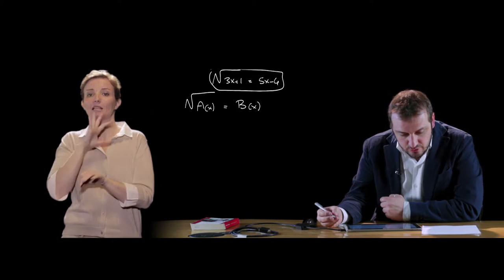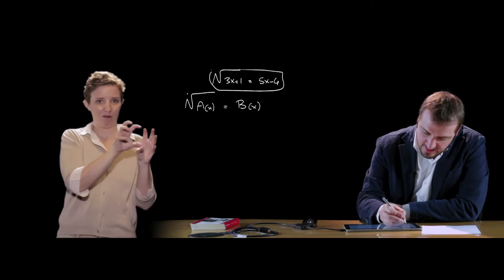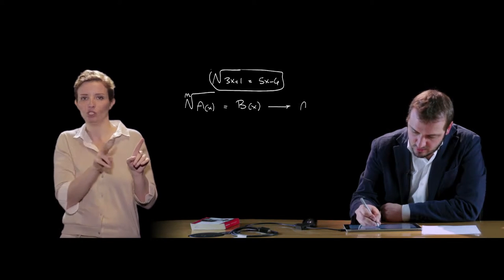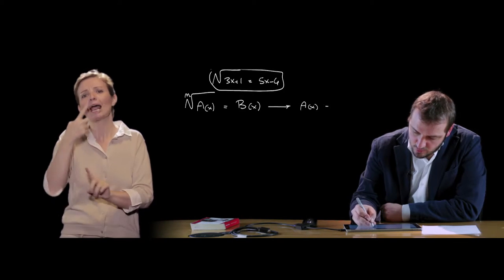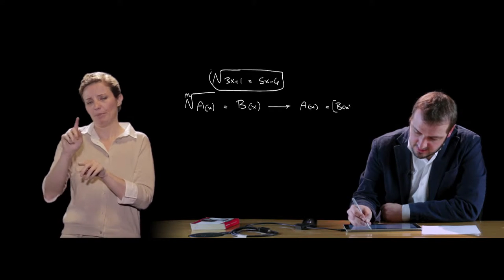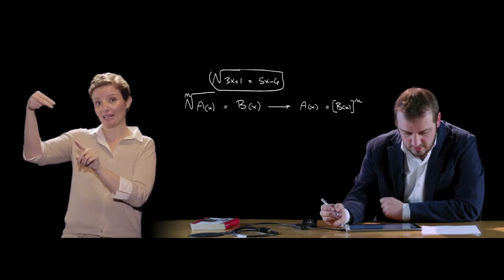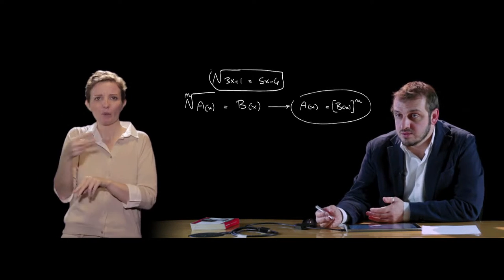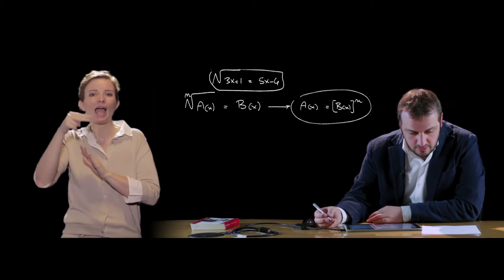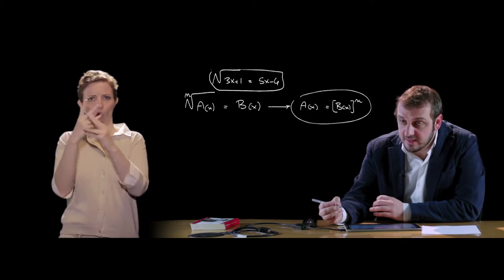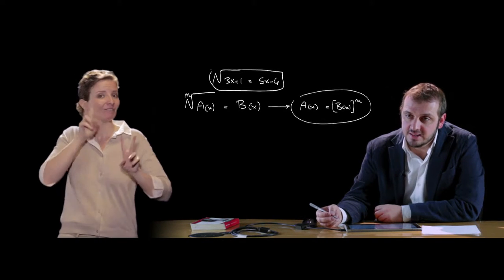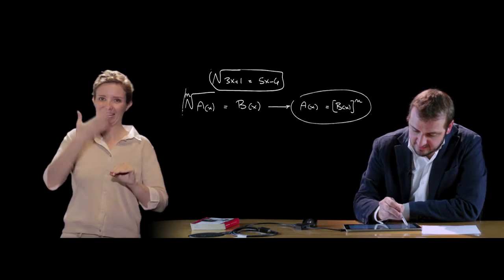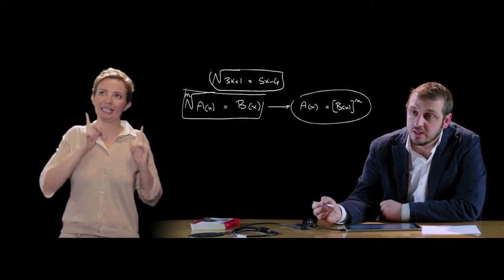Una volta che abbiamo isolato il radicale è possibile elevare all'indice ennesimo sia primo che secondo membro, quindi trasformare questa equazione in un'equazione del tipo a(x) uguale b(x) alla n, elevando alla n primo e secondo membro. A questo punto si va a risolvere questa equazione, che diventa un'equazione di grado n, trovare le soluzioni e poi dobbiamo verificare se quelle soluzioni fanno parte del dominio di esistenza che abbiamo preliminarmente individuato.